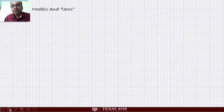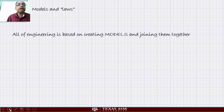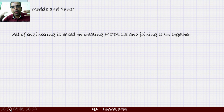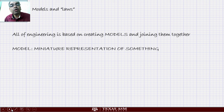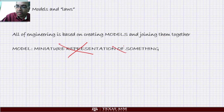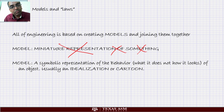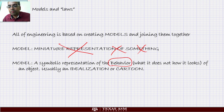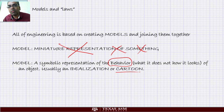Let's talk about what is meant by a model and what these laws are. All of engineering is based on creating models and joining them together in some complicated way — that's almost all of the way in which we think. Generally speaking, people have a misunderstanding: in the engineering context a model is not a miniature representation of something. It's a symbolic representation of the behavior of an object — usually an idealization or a cartoon. We exaggerate the behavior and ignore most other things, just like a cartoon.